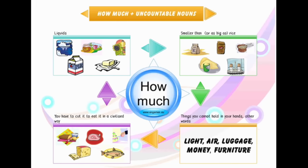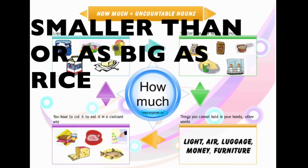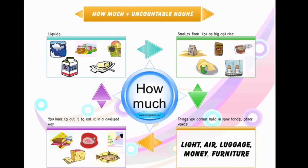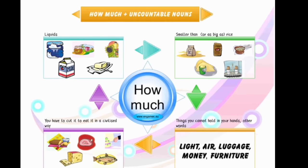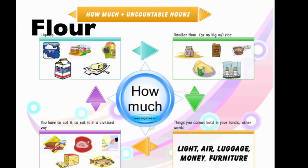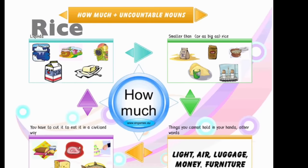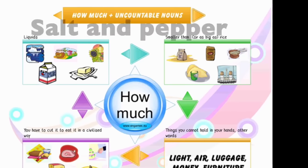Then, if we continue, you can see smaller than or as big as rice. If you look at the pictures, you can see that there is a bag of flour, a bag of sugar, a bag of rice, a bag of oats, salt and pepper.